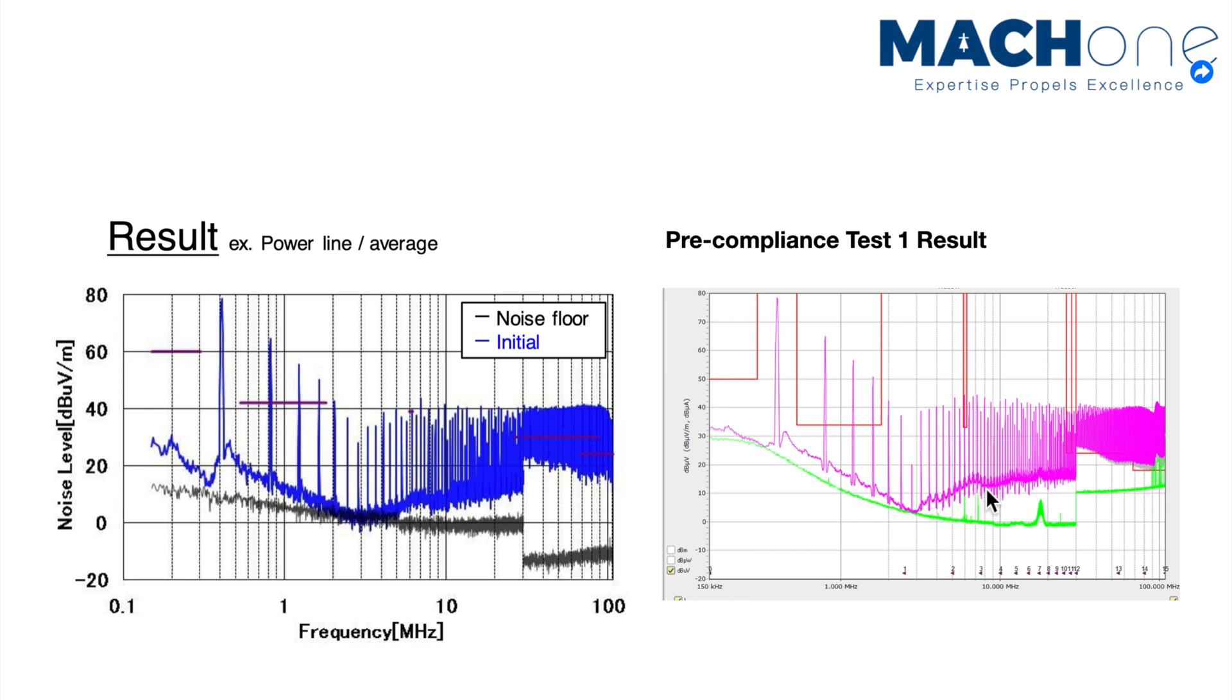The difference is, as you can see here, this is their ambient noise scanning result, and the green line is our ambient noise scanning result. As you can see, we picked up some ambient noise, particularly in this region, which is between 10 megahertz and 20 megahertz, and close to 100 megahertz.